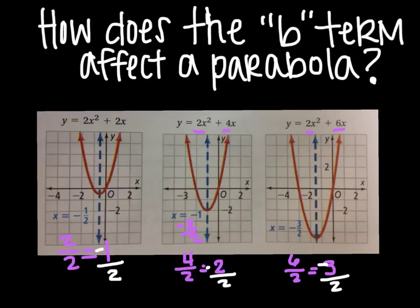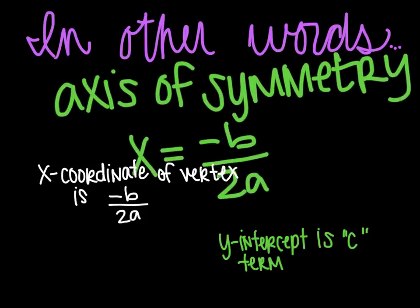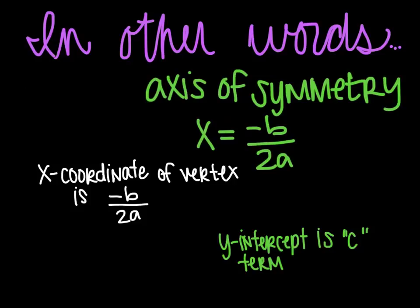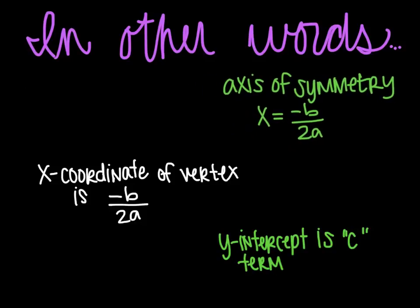So, in other words, in order to find your axis of symmetry, it's the opposite of your b over your 2 times your a term. In other words, the axis of symmetry is x equals the opposite of b, so the opposite of your b term, divided by 2 times your a term. By doing that, that will give you your axis of symmetry.